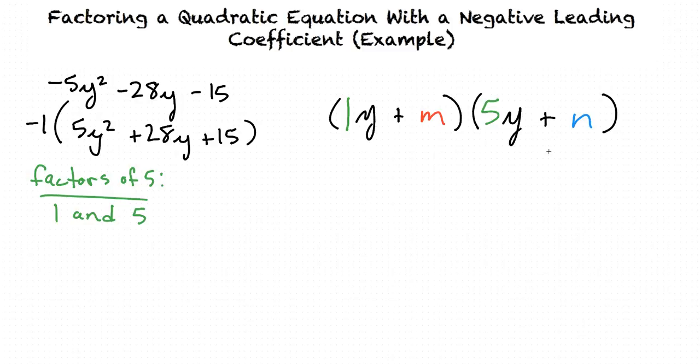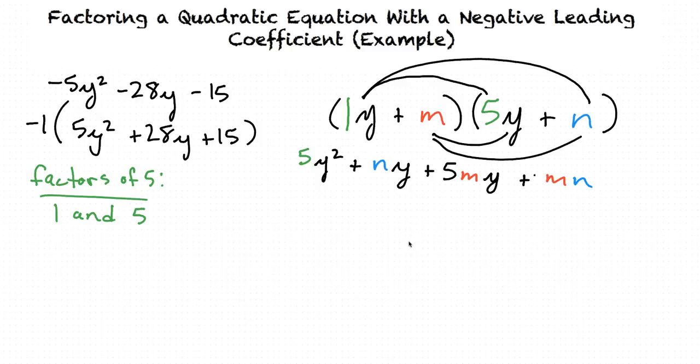We can now expand this out by multiplying the first terms, the outer terms, the inner terms, and the last terms. And after doing so, we would get 5y² + ny + 5my + mn. First of all, this ny and 5my are two like terms, so we can add them together to get (5m + n)y.